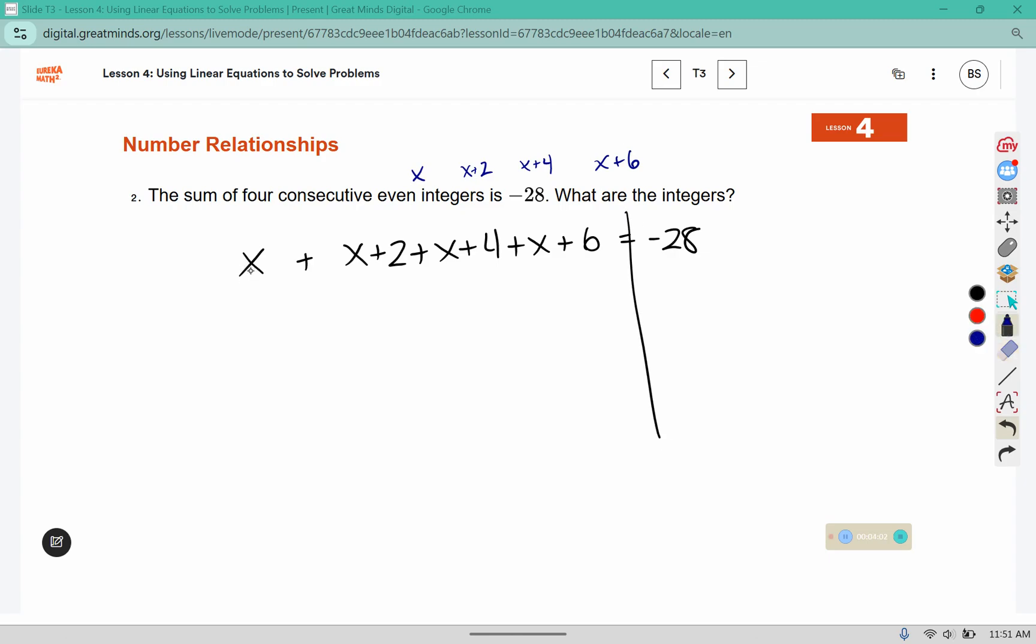Combine our like terms. Move that 12 to the other side. Divide both sides by 4. So I have the first one is negative 10. If I add 2, that would give us negative 8. If I add 4, that's negative 6. And if I add 6, it's negative 4. And if I add all those up, it should come out to negative 28, which it does.